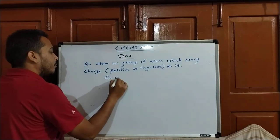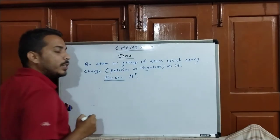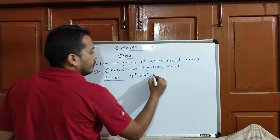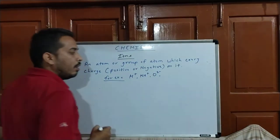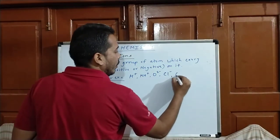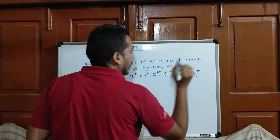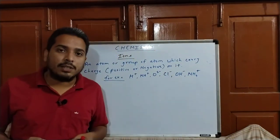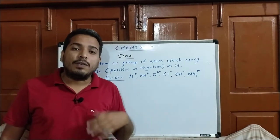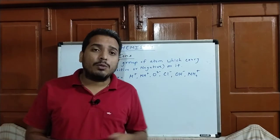For example, H+ ion is called hydrogen ion. Na+ ion is called sodium ion. O2- is called oxide ion. Cl- is chloride ion, OH- is hydroxide ion, and NH4+ is ammonium ion. These are some examples of ions. It is an atom like hydrogen or a group of atoms like OH or NH4 which carries any charge, positive or negative. That is called an ion.